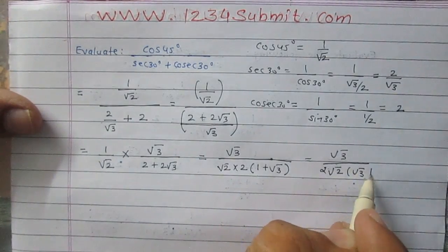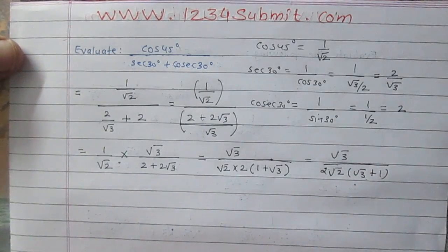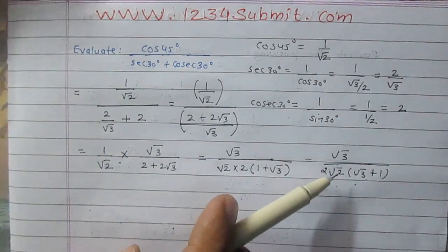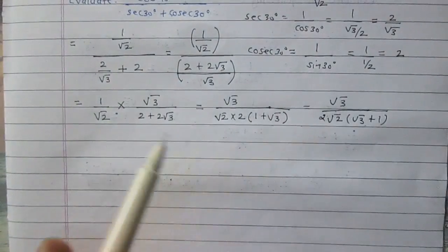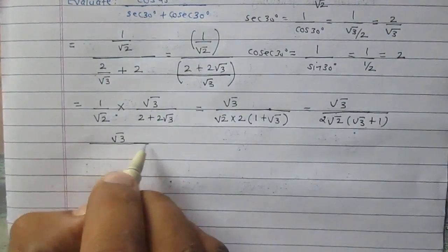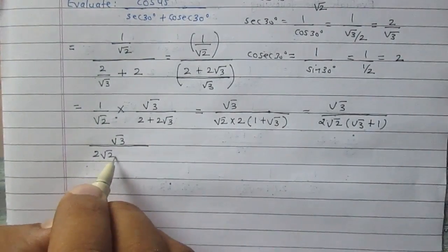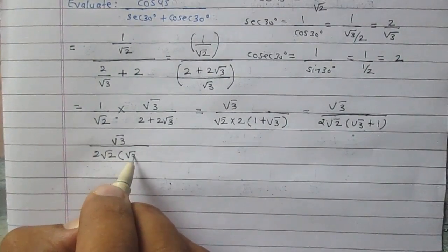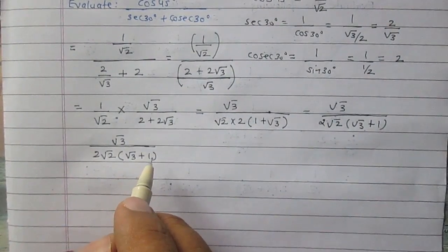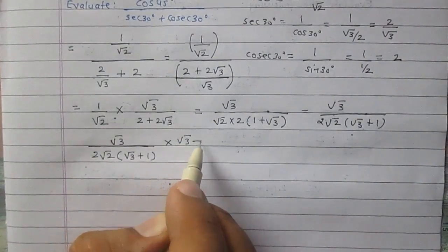Further, you can simplify to square root 3 over 2 square root 2, and then square root 3 plus 1. In order to simplify it further, we will rationalize this expression. The term is square root 3 divided by 2 square root 2, multiplied with root 3 plus 1. It will be rationalized after multiplying by the term square root 3 minus 1.